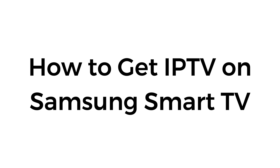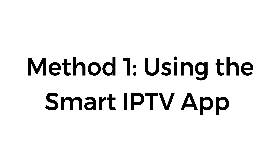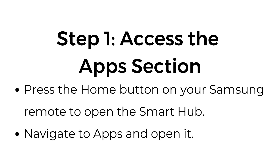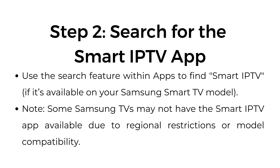How to get IPTV on Samsung Smart TV. Method number one: using the Smart IPTV app. Step number one, access the app section. Press the home button on your Samsung remote to open the Smart Hub. Navigate to Apps and open it. Step number two, search for the Smart IPTV app. Use the search feature within Apps to find Smart IPTV, if it's available on your Samsung Smart TV model.